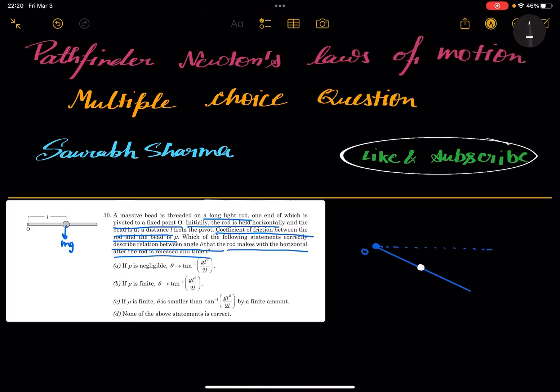So bead is experiencing some forces. One is normal in this direction and same amount of normal is applied by the bead on the rod. So this angle is L. So of course torque is acting. So net torque on rod is tau equals N into L about point O.